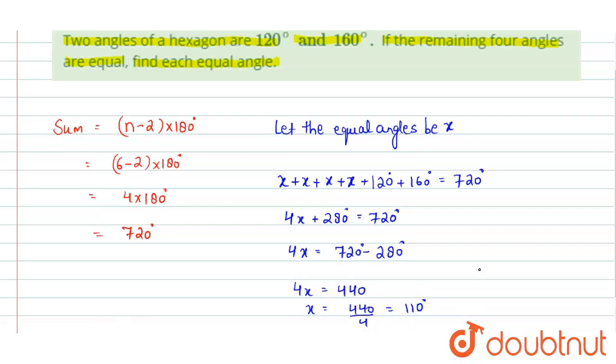So this is the value of all four equal angles, that is 110 degrees. I hope you have understood. Thank you.